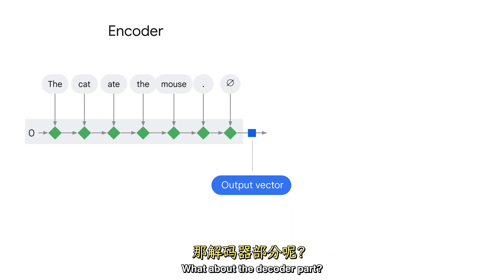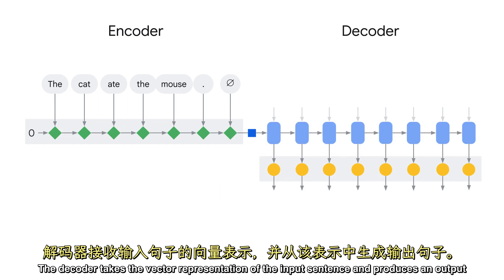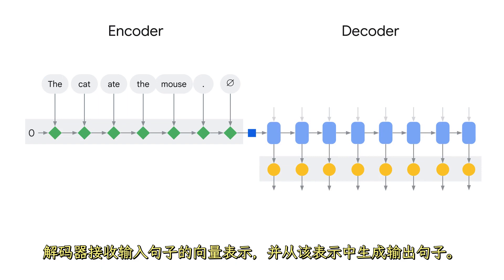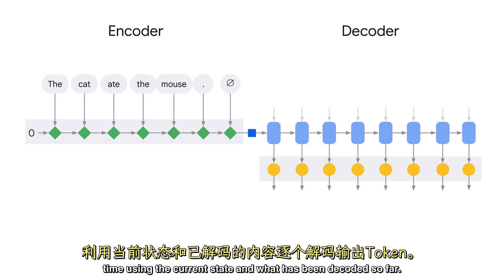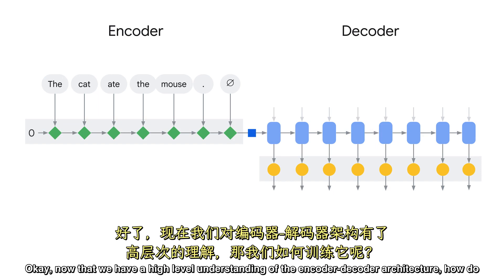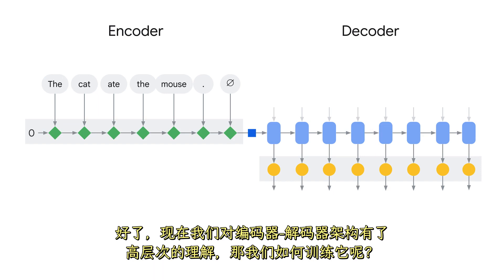What about the decoder part? The decoder takes the vector representation of the input sentence and produces an output sentence from that representation. In the case of a RNN decoder, it does it in steps, decoding the output one token at a time using the current state and what has been decoded so far. Now that we have a high-level understanding of the encoder-decoder architecture, how do we train it?